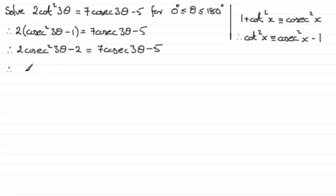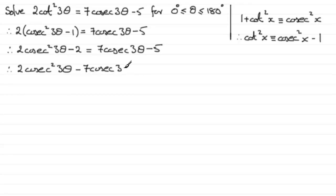Starting with 2cosec²(3θ), then subtracting 7cosec(3θ) from both sides, and adding 5 to both sides — minus 2 plus 5 gives plus 3 — equals zero. So we have our quadratic equation in cosec(3θ) set out in the correct format.